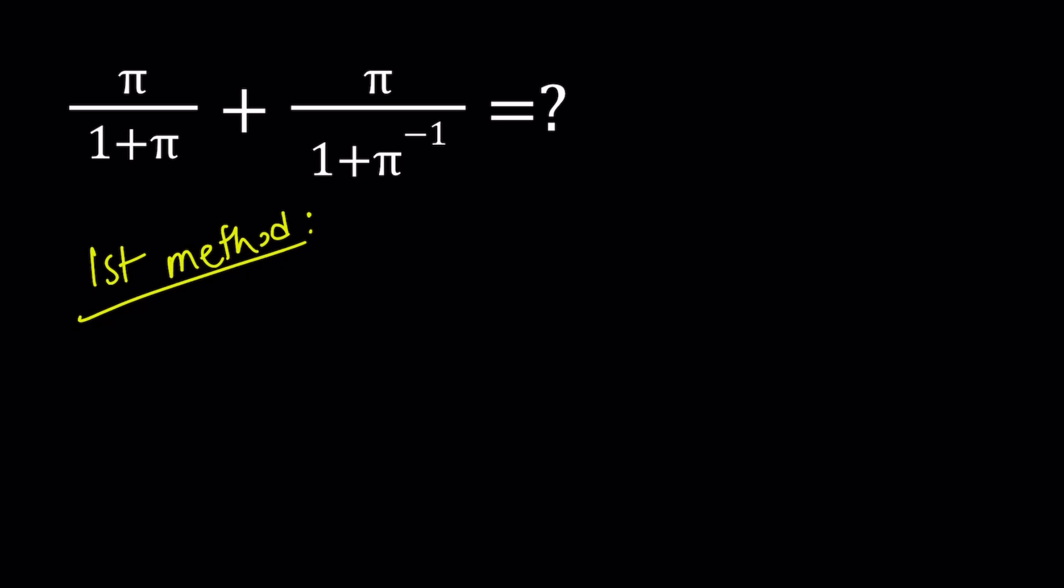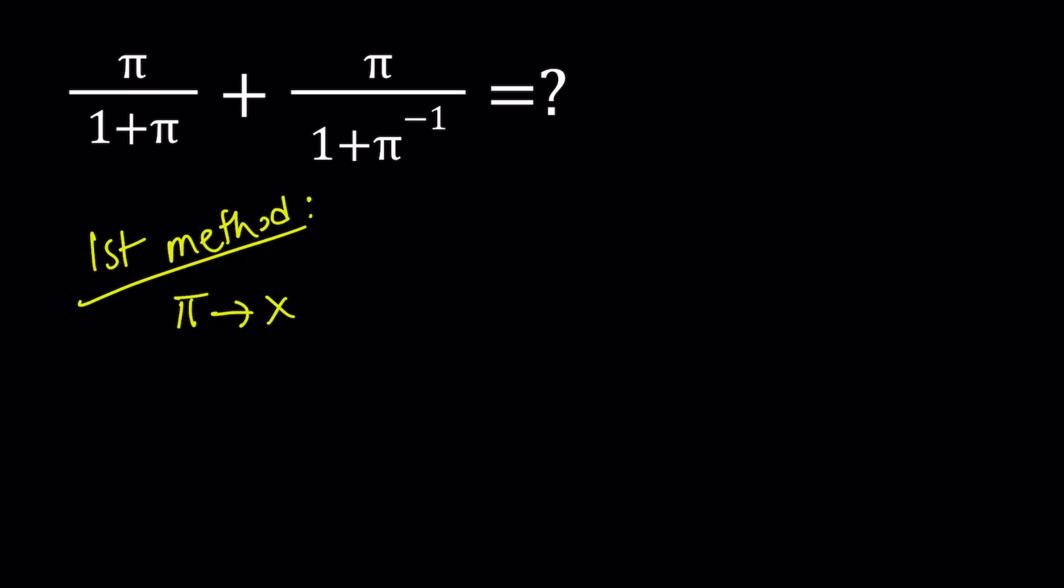Now you don't have to do it here but I just want to feel like using substitution because substitution is awesome. So I'm going to replace pi with x and write my expression as x over 1 plus x plus x over 1 plus x to the power negative 1.